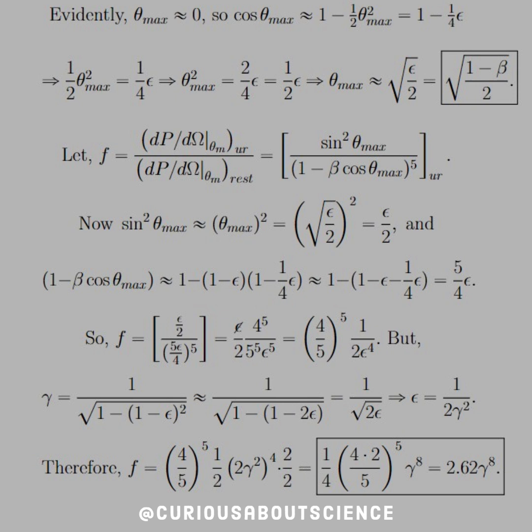Instead of having a plus epsilon squared, that will be meaningless. So the 1s cancel, and we're left with 1 over square root 2 epsilon. So if we solve this for epsilon, we get 1 over 2 gamma squared. And so the fraction becomes 4 over 5 to the fifth, one-half, times 2 gamma squared to the fourth power.